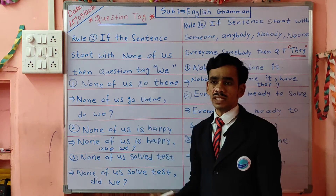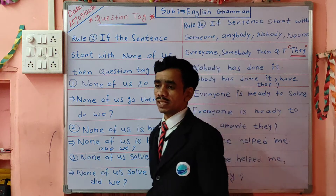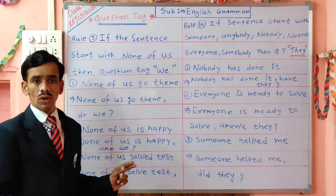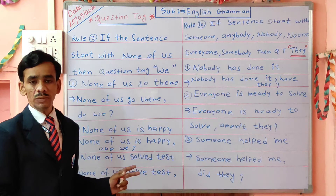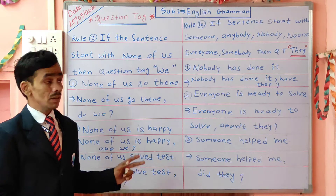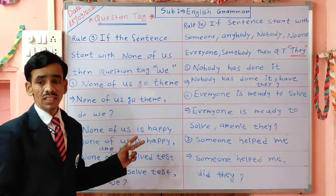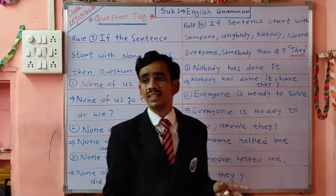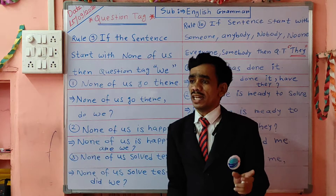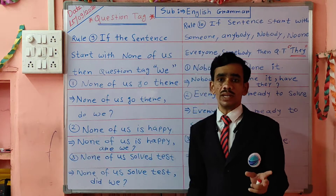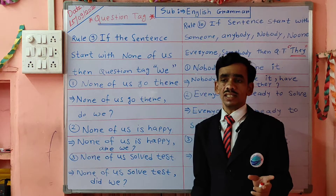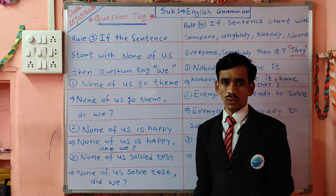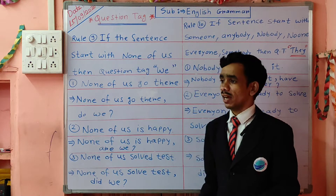What is rule number 7? If the sentence starts with a command or order — it means the sentence starts with a main verb — and you have an order or command, then we take the question tag 'will you' compulsory.